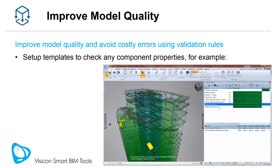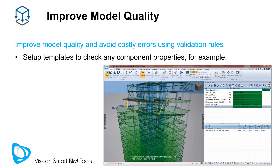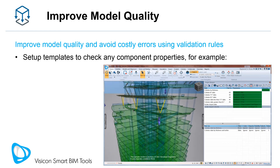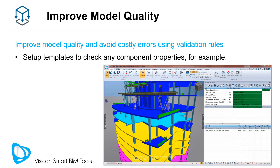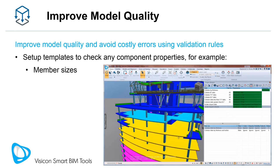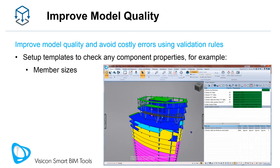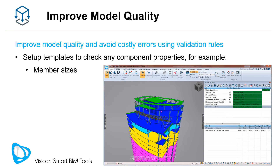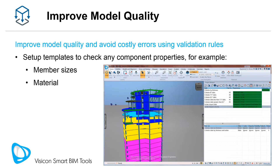Set up templates with validation rules to check any component property in your model. For each new model, simply open the model, apply the template, and start checking for member size assignments. This can be for any property like slab thickness, flange width, etc., as well as material definitions.